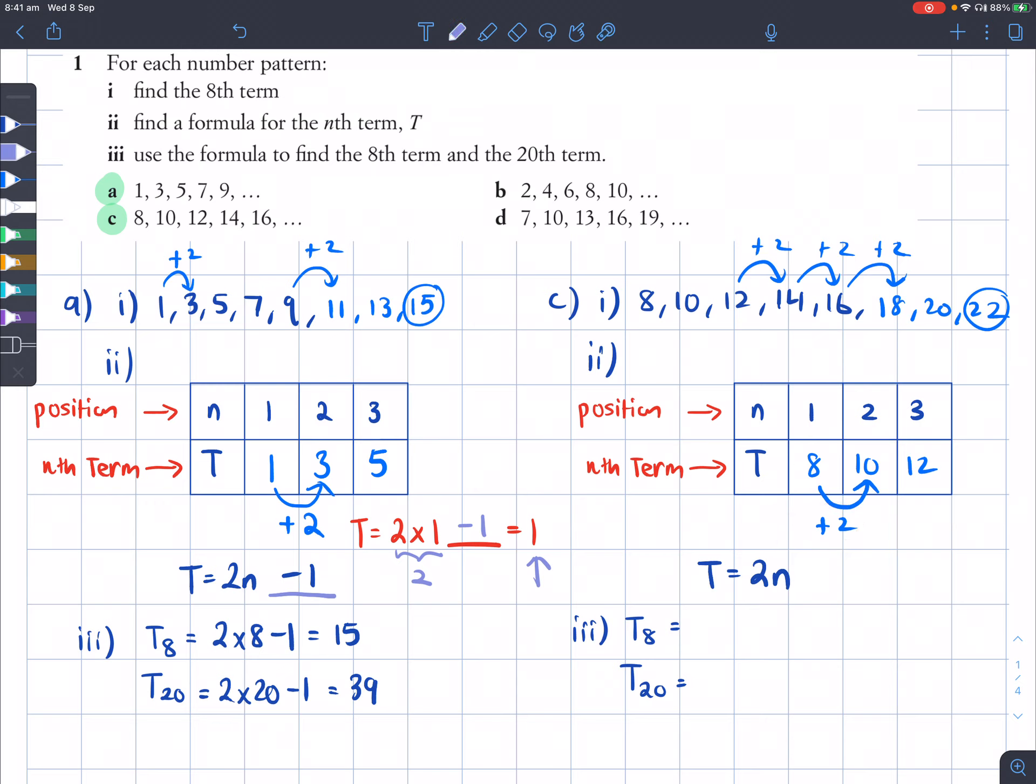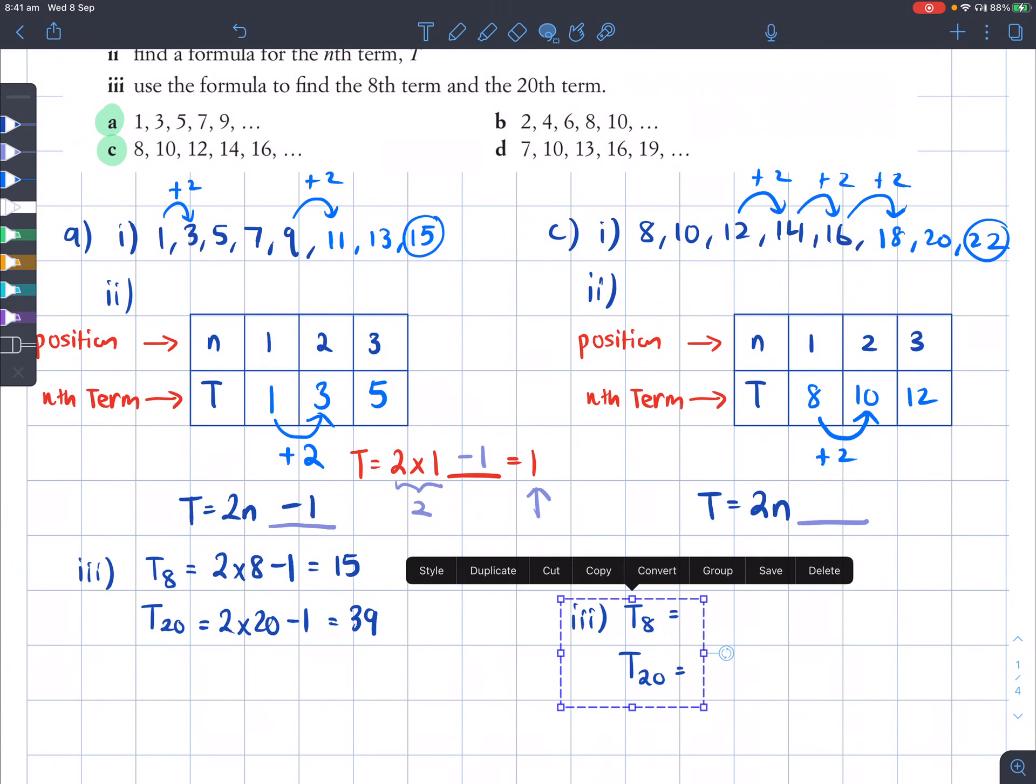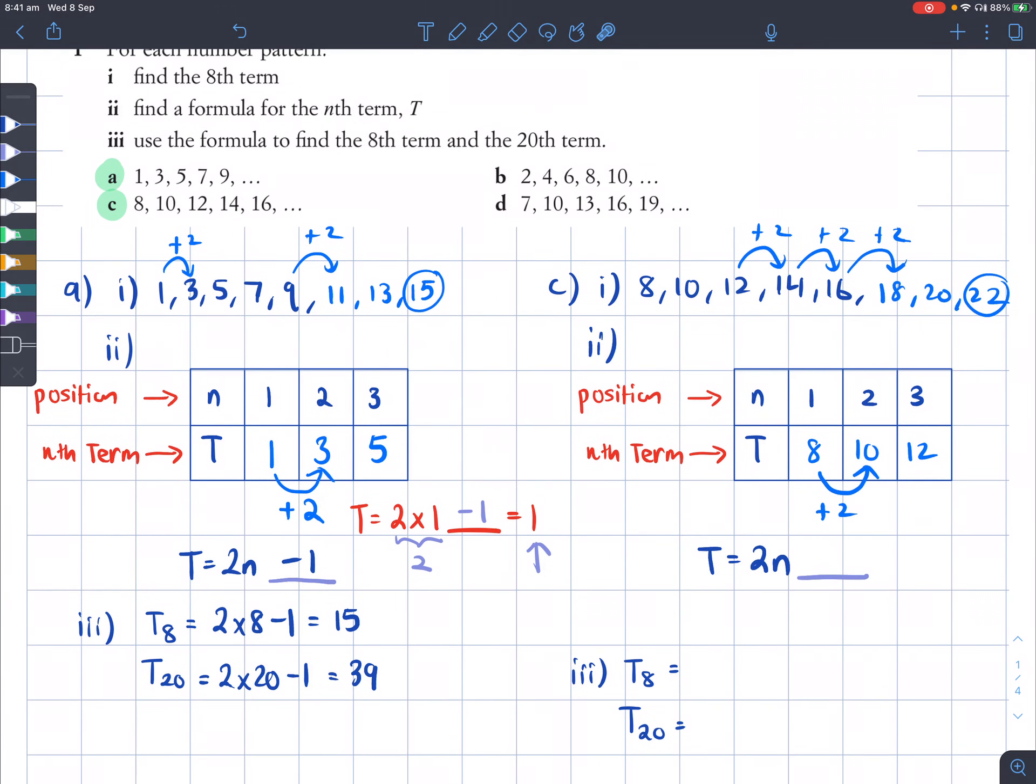So what this means is our formula where T equals 2n, first of all. So whatever this number goes up by is placed here before the n. And we might have something after that, like a plus or a minus of a number. So we're going to test that out. In order to do that, I'll just choose a pair of values here. Last time I chose this first pair, this time I'll choose this pair maybe.